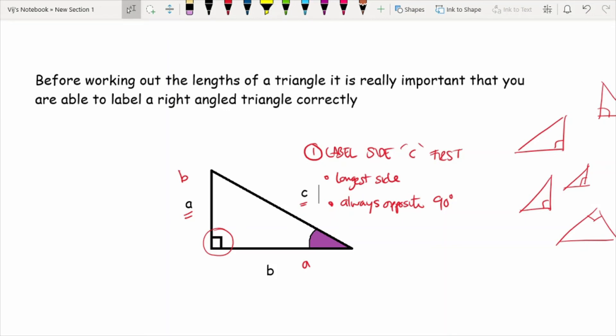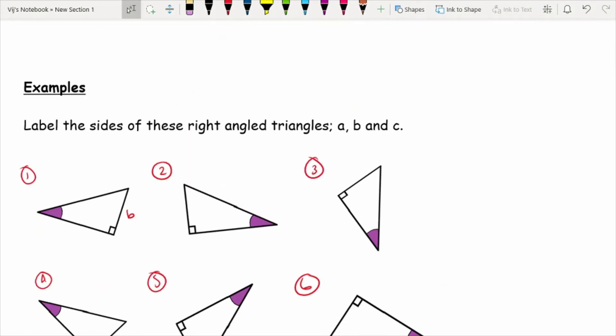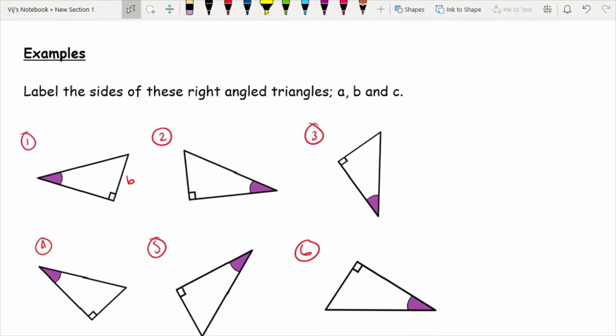So moving on from this, let's have a look at labeling the triangle. Now, if you'd like to have a go at labeling these triangles before we go through the answers, then feel free to pause the video. Copy the diagrams to the best of your ability. Don't worry too much if they're not to scale, as long as just represent the 90 degrees with a little box in the corner. And then all you need to do is label your A, B and C.